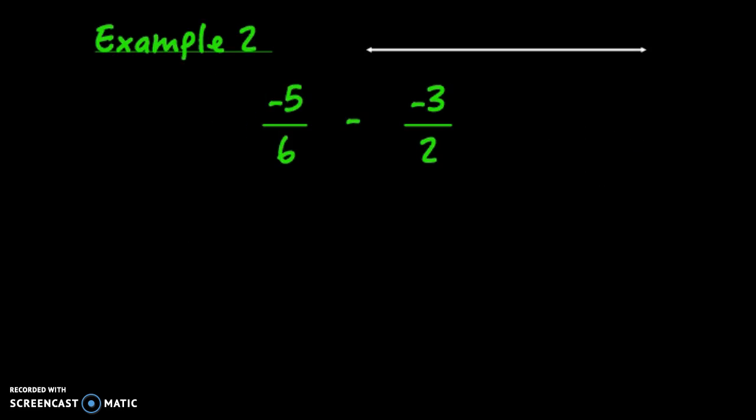Let's look at a second example: negative 5/6 minus negative 3/2. When you have minus negative, many people change that to negative 5/6 plus 3/2. You need to think about what this looks like on a number line. Starting at zero, you move negative 5/6 to the left, then adding 3/2 goes to the right.